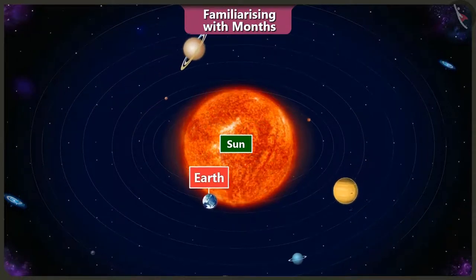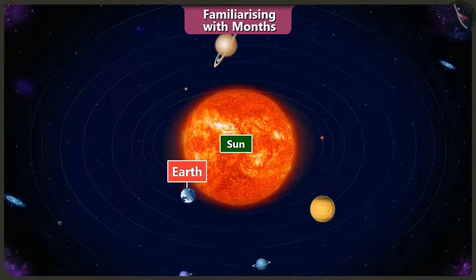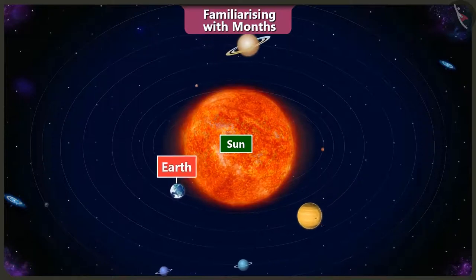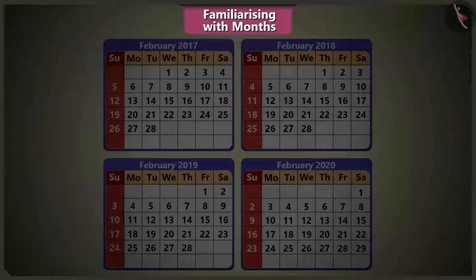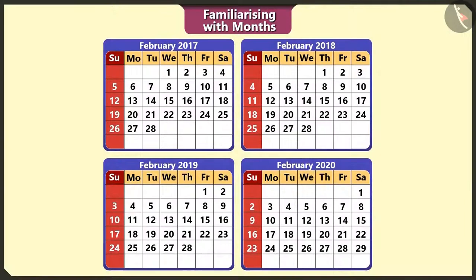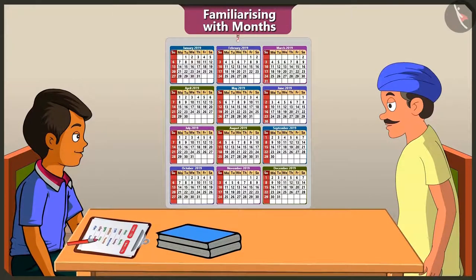These remaining six hours of every year added together for four years becomes one day, so every fourth year the month of February has 29 days, which is called a leap year. Uncle, if we add all the days of the 12 months, then what is the total number of days?